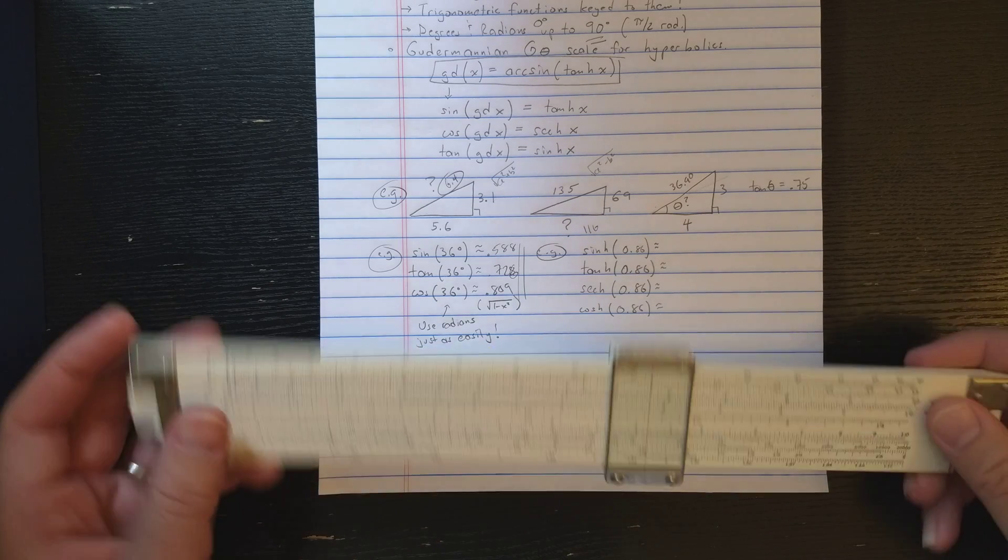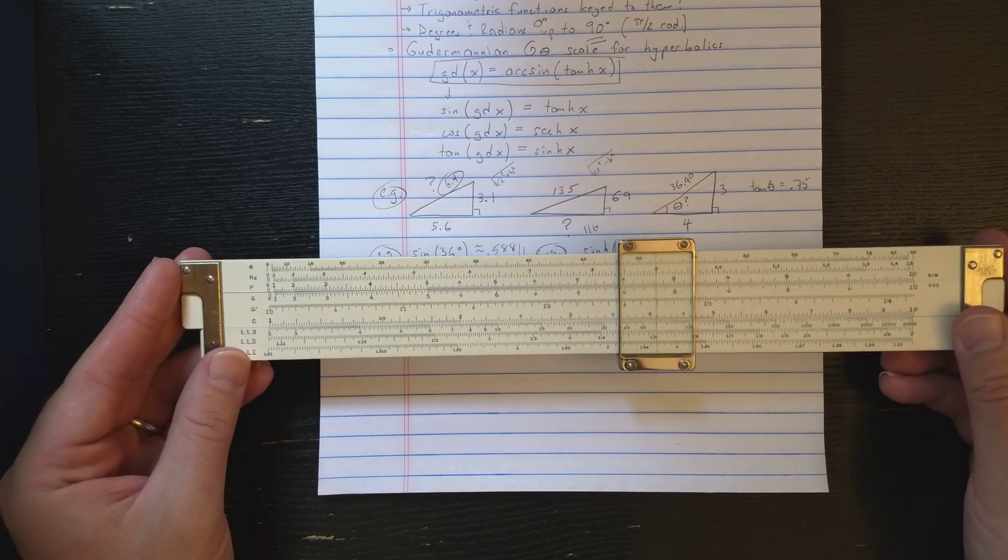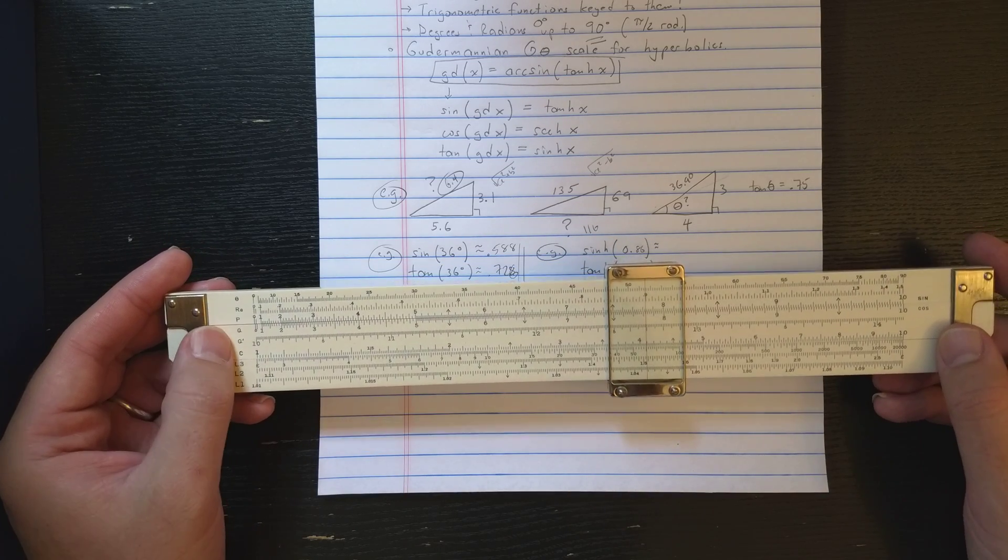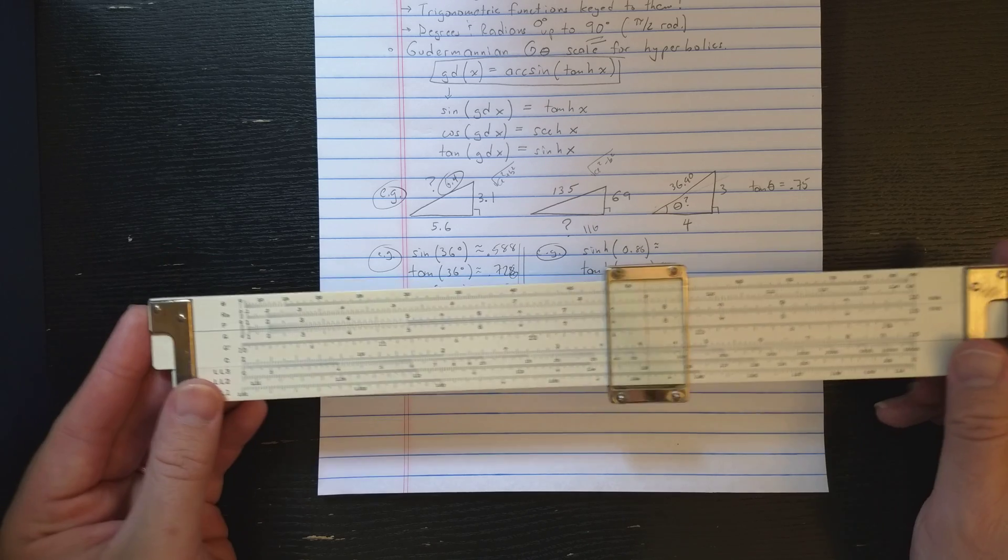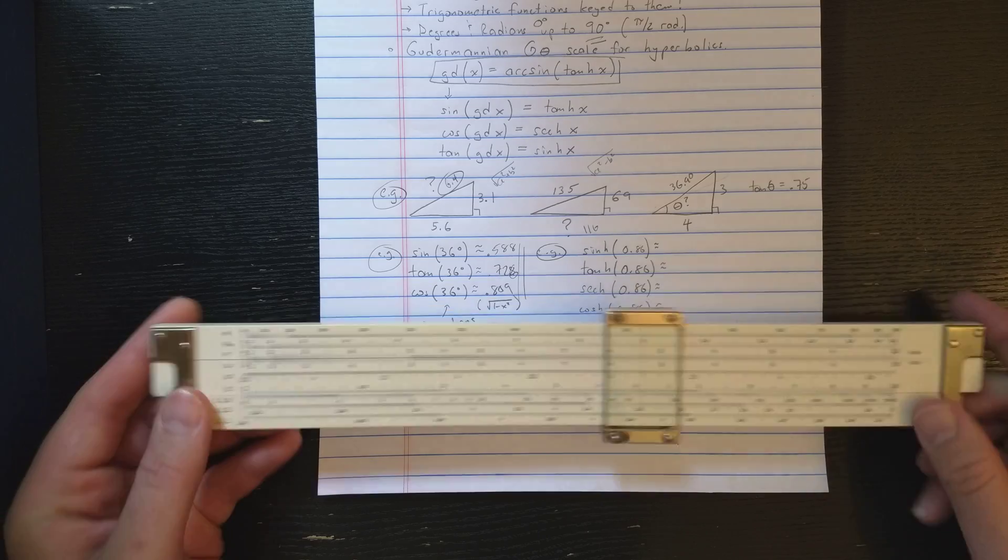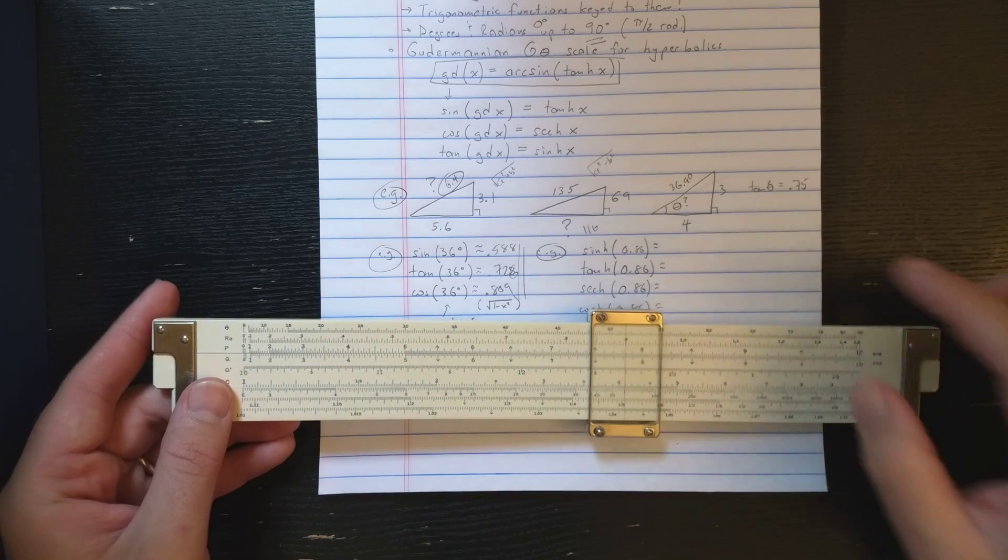Now, other slide rules have the strange Pythagorean scales, pq, q prime, sometimes with q and q prime on the base instead of the slide. So other slide rules have those scales which allow you to do these triangle solutions in the way that I did them.